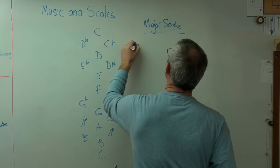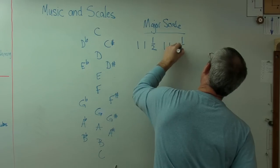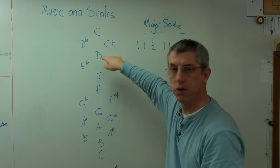Well, all a scale is, is a collection of eight notes picked from the twelve possible notes. And they're picked out using a pattern, kind of a recipe. So for a major scale, a recipe goes one, one, one, half, one, one, one, one, half.